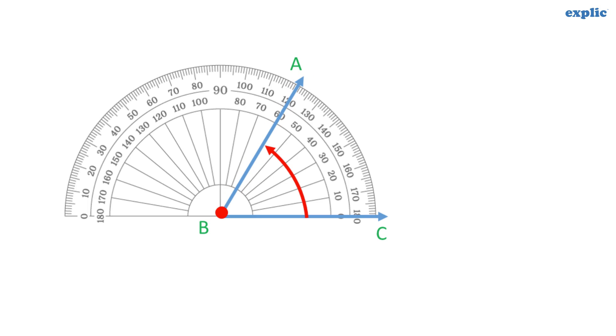Read the number that matches with line AB. Since we are measuring the anticlockwise angle, we will read the inner scale. It is 60. Hence, angle ABC is equal to 60 degrees.